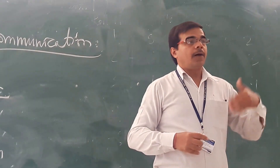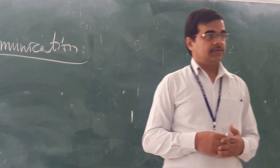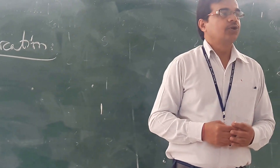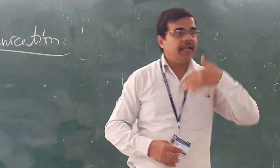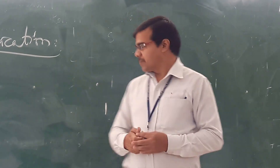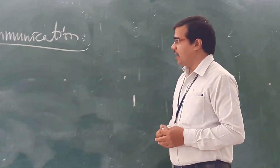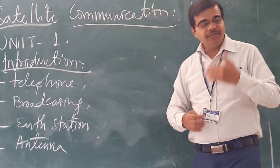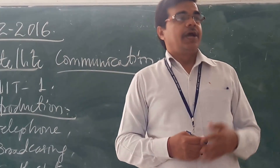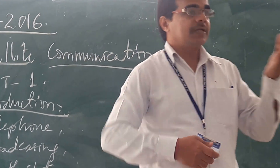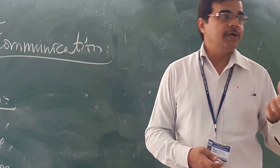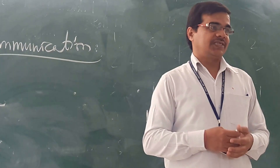Whatever signal is transmitted from the earth station to the satellite, that is called uplink. We are sending the information from one place, and similarly there should be some other place where we need to receive those signals.